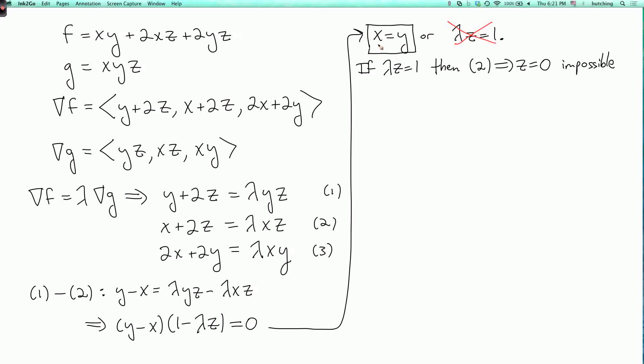So now let's use the third equation. So we'll substitute in for y. So I get that 4x equals lambda x squared. And since I'm requiring x to be non-zero, I can divide by x. So you get 4 equals lambda x. And then when I put that back into equation two, I get that x plus 2z equals 4z. So subtracting 2z from both sides, this tells me that x equals 2z.